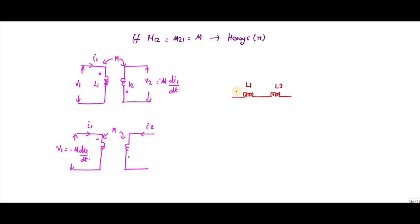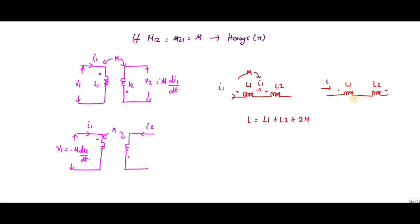For L1 and L2 where both dots are on the same side and the current flowing through is I1, I can write the total inductance L is equal to L1 plus L2 plus 2M. In the other case, with L1 and L2 and mutual inductance M, where one current is entering and the same current is leaving — that is, dots are opposing — I can write L is equal to L1 plus L2 minus 2M. The first is called series aiding connection and the second is called series opposing connection.